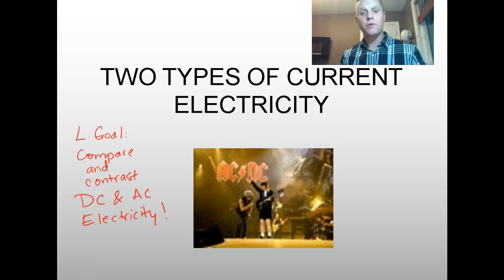Good day grade 9 science students. Today we're learning about the two types of current electricity. One is known as AC and the other is known as DC.